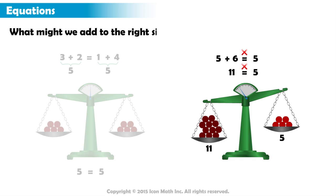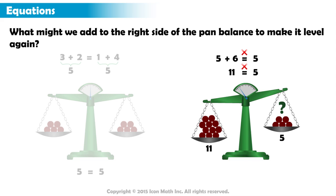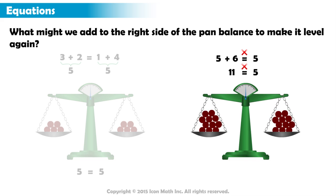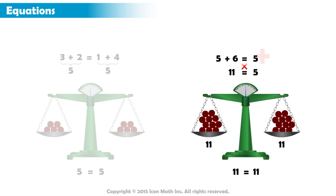What might we add to the right side of the pan balance to make it level again? By adding 6 more counters to the right side of the pan balance, we make both the left and right side have the same number of counters. The pan balance is level again. Similarly, if we add 6 to the right side of the equation, the equation becomes 11 equals 11, which is true.